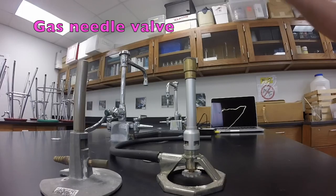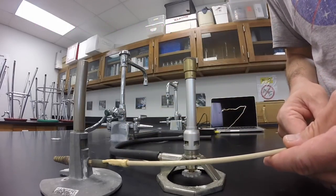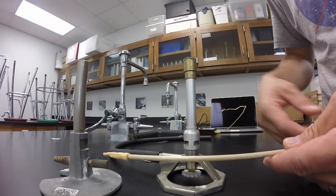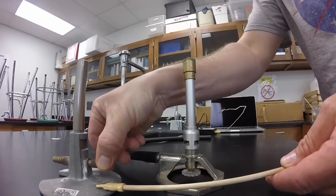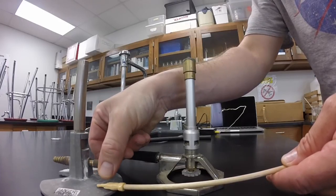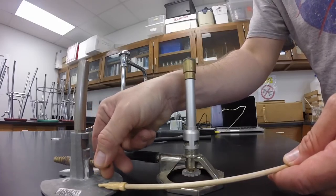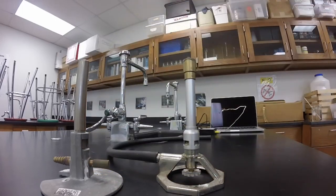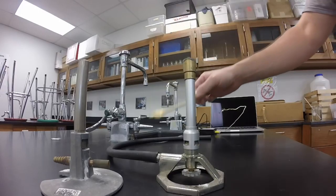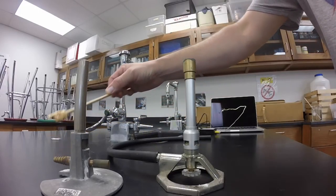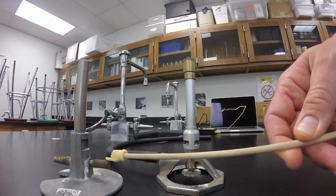On other models, such as this one, it's here, and it's a screw valve that you screw in and out. The gas needle valve controls the flow of gas into the Bunsen burner from the supply valve.